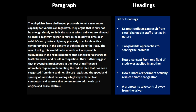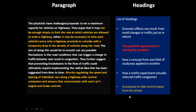Now let's look at the headings. 'Dramatic effects can result from small changes' — this cannot be the answer because we are not talking about small changes; we are talking about a radical idea. 'Two possible approaches to this problem' — that could be a possibility, as I've highlighted two approaches. 'A concept from one field of study was applied' — there's no such concept mentioned, so this is not the answer. 'A maths experiment actually reduced' — there's no maths experiment discussed. 'A proposal to take control away from the driver' — this is a strong possibility because we see directly regulating speed using computers and sensors, not relying on drivers. This seems to be the best answer, with 'two approaches' as a close second. And indeed, the last one was the answer.